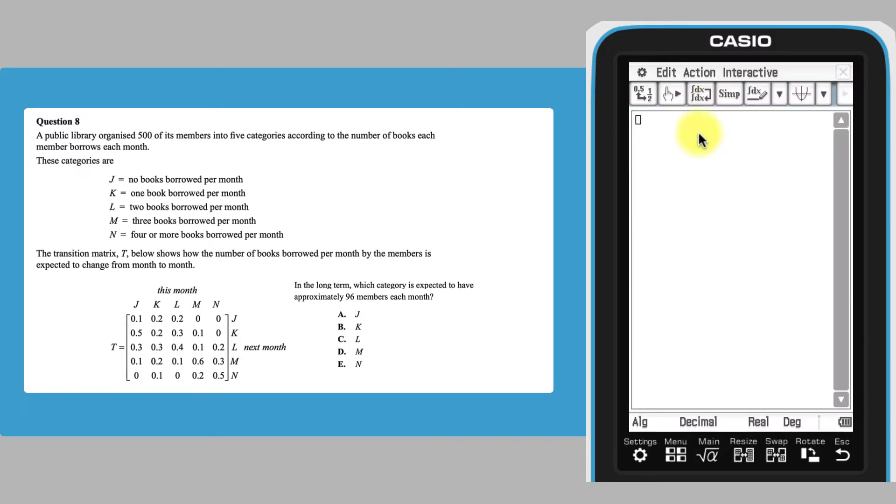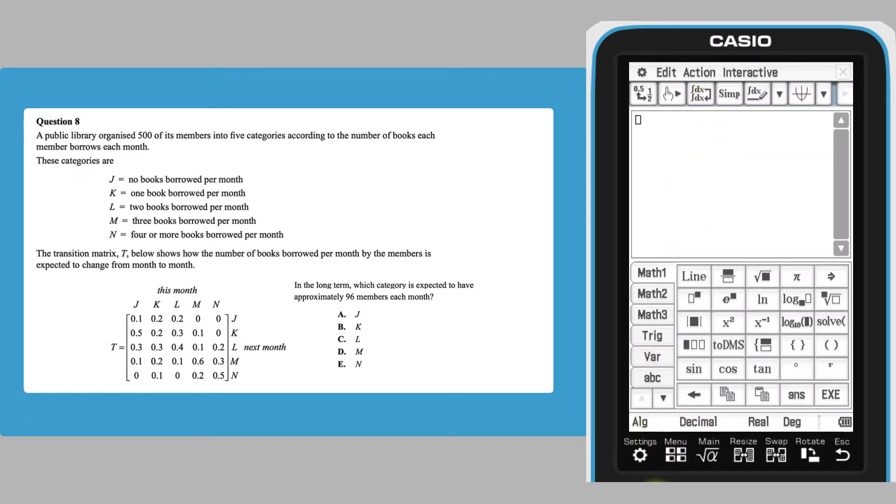To do this in ClassPad's main app, bring up the keyboard and then choose Math 2 to access the matrix keys. Tap the square matrix key until a 5 by 5 matrix is created.